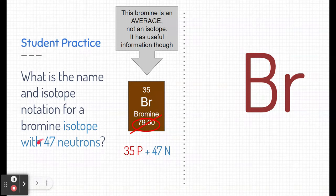Now, this isotope specifically has 47 neutrons. Both the protons and the neutrons make the mass of this particular isotope of bromine. So, if we add those together, we get 82.